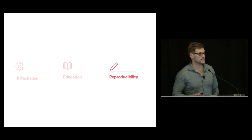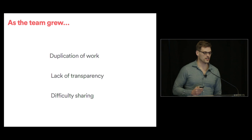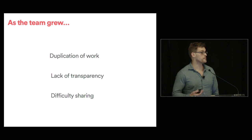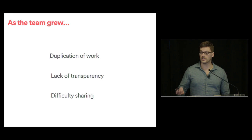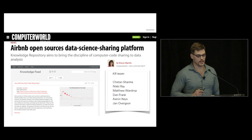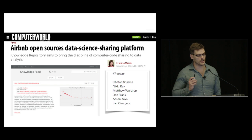Finally, this idea of reproducibility really demonstrates why R is so powerful — things you cannot do with a non-programming language. Remember the problem of duplication of work, lack of transparency, and difficulty sharing knowledge? This extended not only to code but also to reproducible research and analysis. Someone would ask 'has anyone looked at host churn?' and you'd find it in a Keynote somewhere, or a Google Doc, or a GitHub post. We realized that for the team to scale, we also had to scale knowledge — so we recently open-sourced something we've been using internally called the knowledge repository.